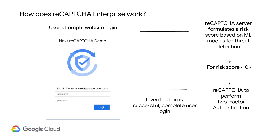In this example, the workflow we have defined is that if the risk score is below 0.4, we will perform a two-factor authentication, and if the user is successful with the two-factor authentication, the user is then going to be allowed to complete their journey on the website.